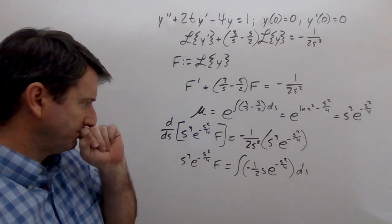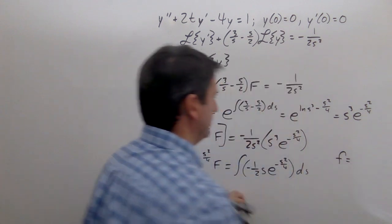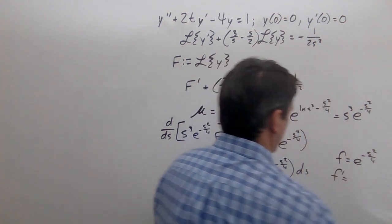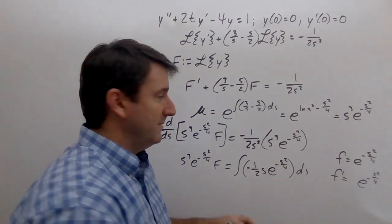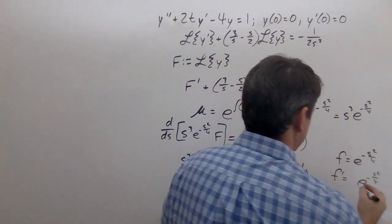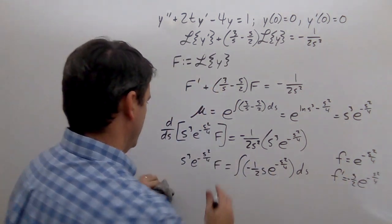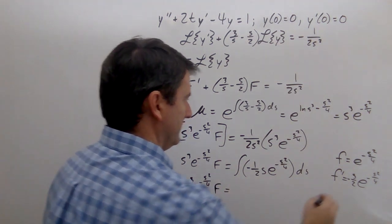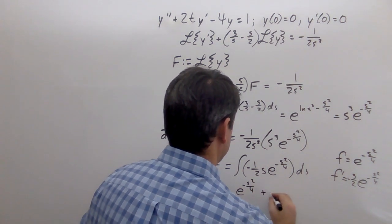To evaluate this integral, notice that if we define g(s) = e to the negative s²/4, then g'(s) = e to the negative s²/4 times negative s over 2, which is exactly our integrand. So the integral evaluates directly, and we get s cubed e to the negative s²/4 times F equals e to the negative s²/4 plus C.